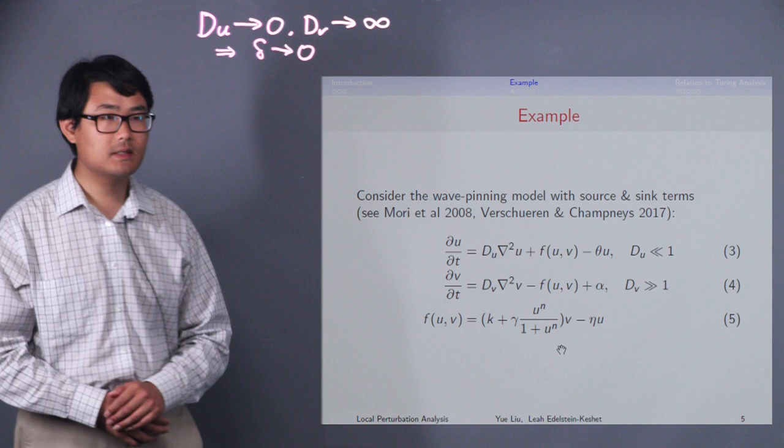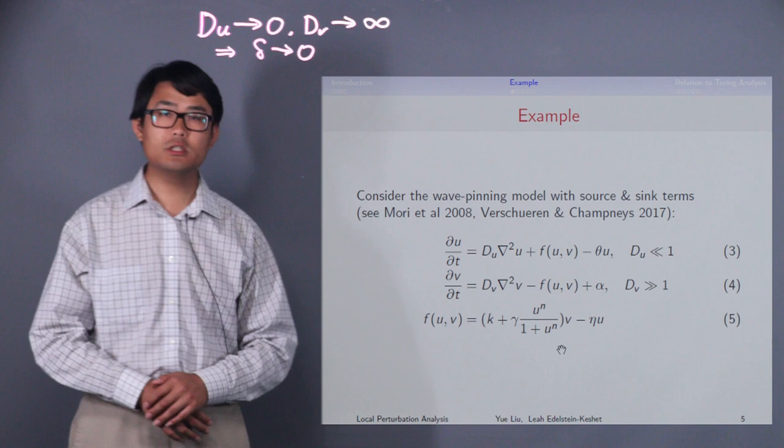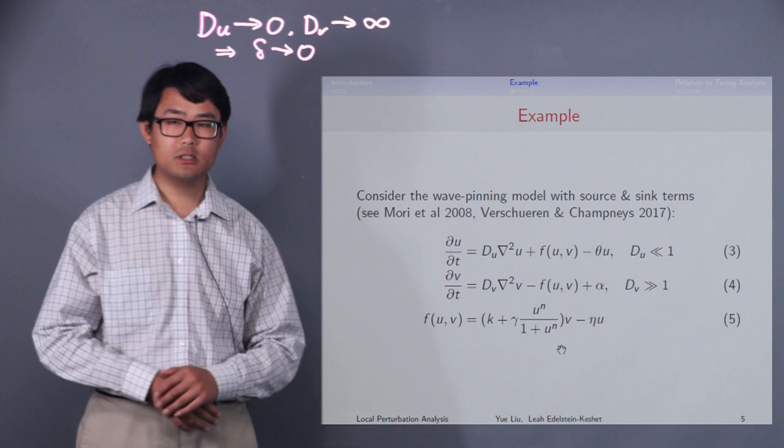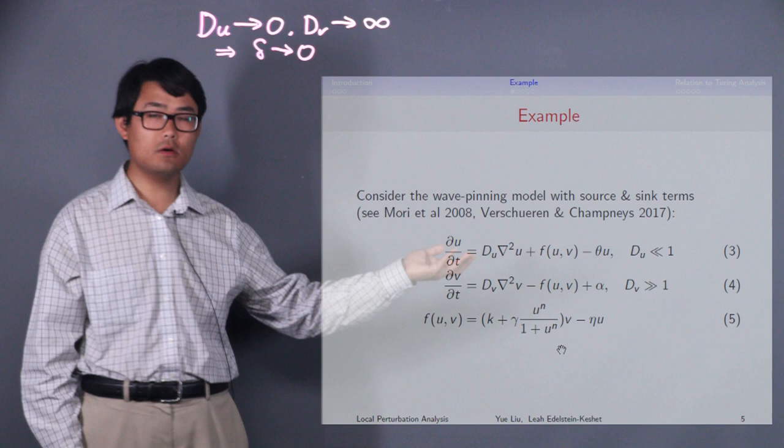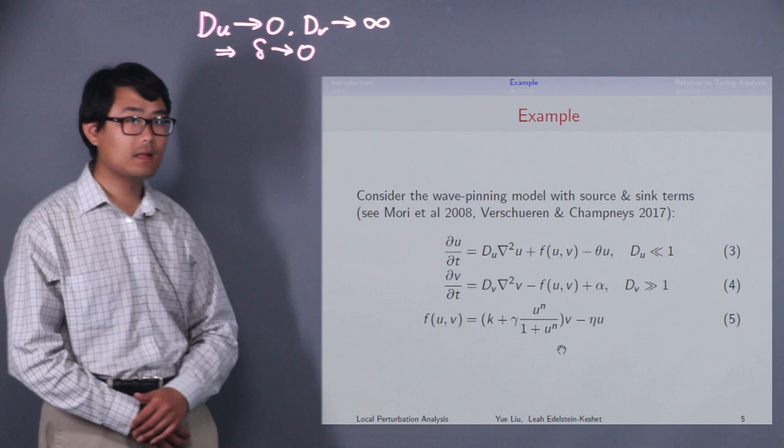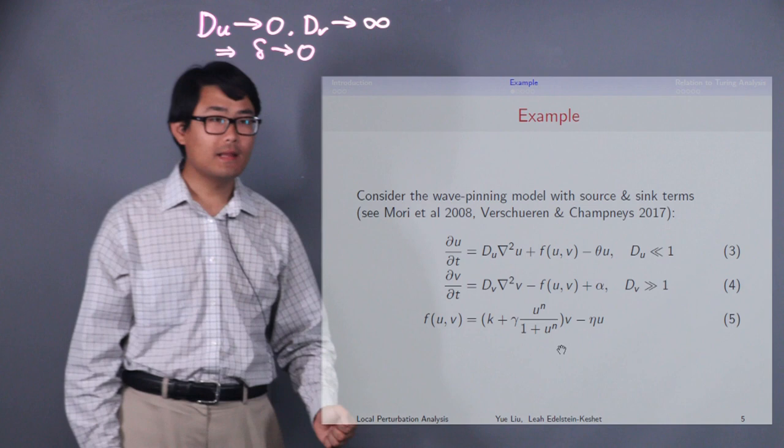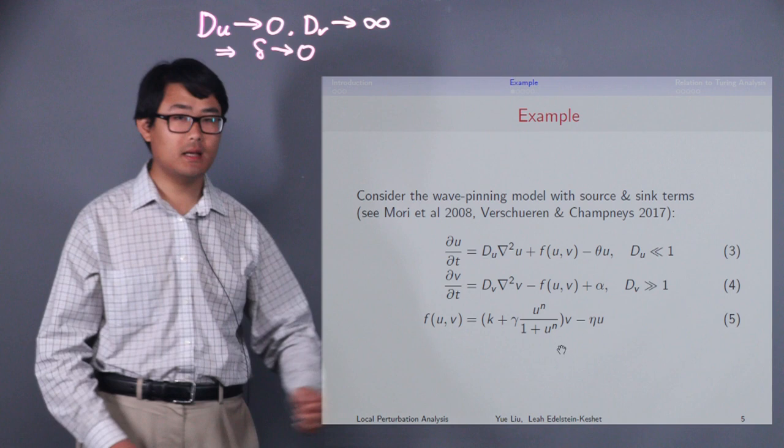For example, let us consider the wave pinning model with source and sink terms. The model is originally proposed by Mori et al. in 2008, and the additional terms are proposed by Versturin and the Japanese in 2017. Here, as before, u is our slow diffusing variable, v is our fast diffusing variable. This f is a reaction term here, and we are going to use this parameter delta as our main bifurcation parameter.